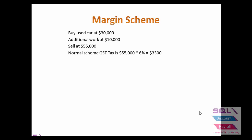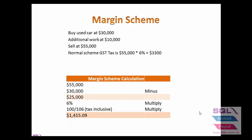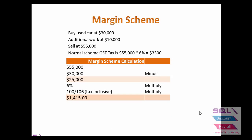But for the margin scheme, the formula is: $55,000 selling price minus $30,000 purchase cost equals $25,000. The system then takes this $25,000, multiplies by 6% GST, and multiplies by 100 divided by 106. This is the formula for tax-inclusive calculation.